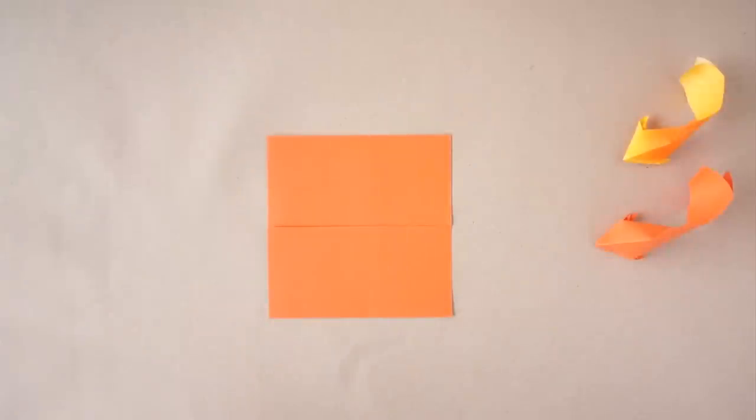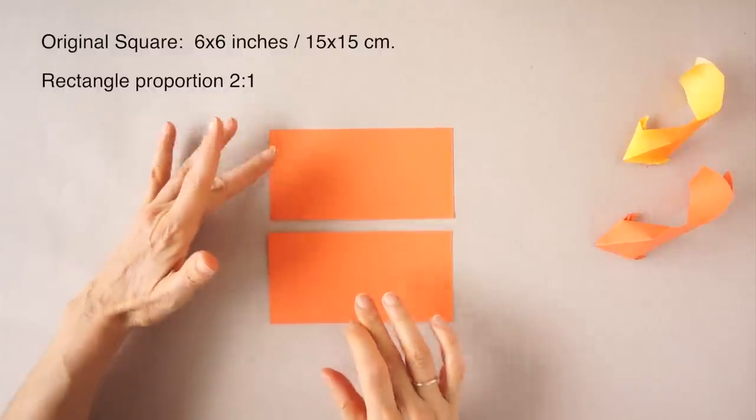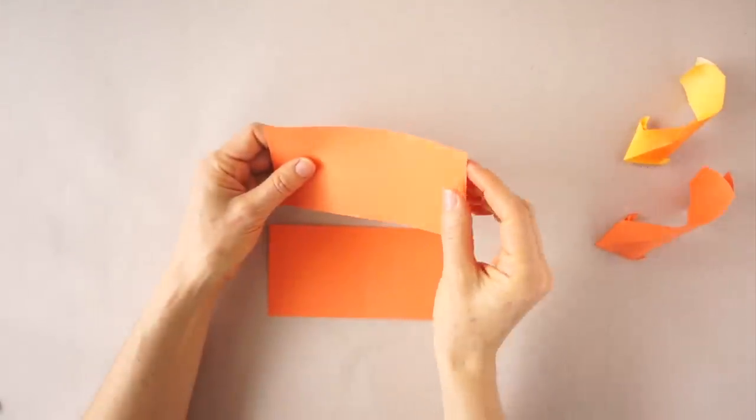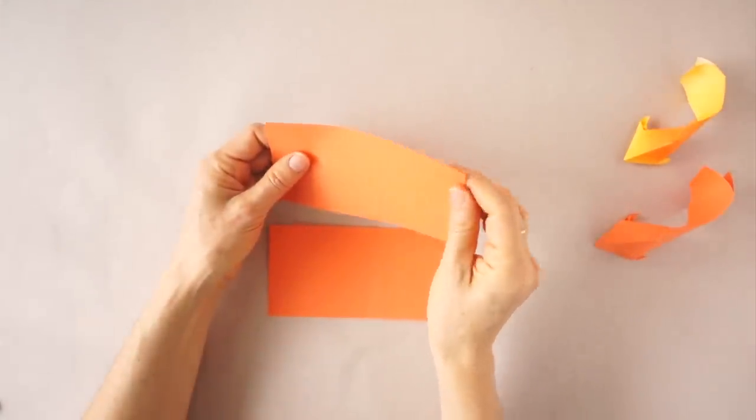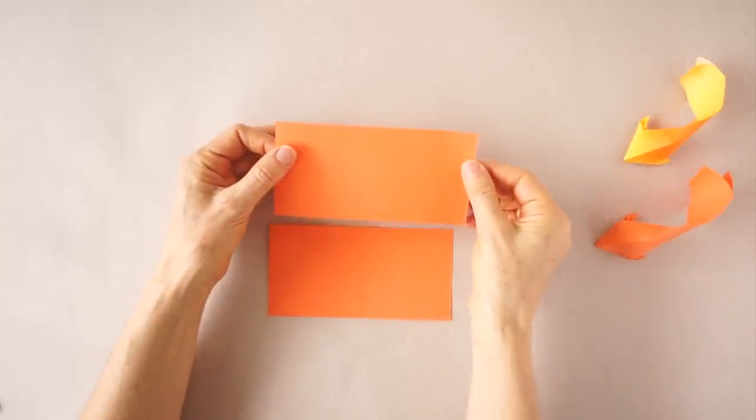To make this fish we need a rectangular piece of paper. Cut a square in half to get two perfect rectangles for this fish. It is better to use paper that is somewhat thick. Office paper is ideal. Same color on both sides.